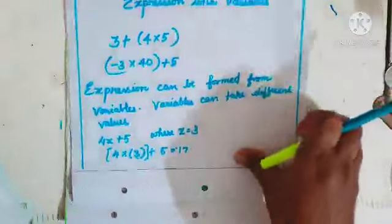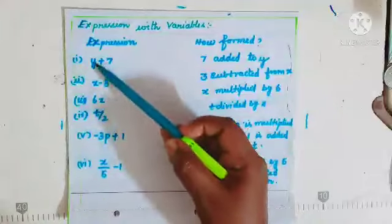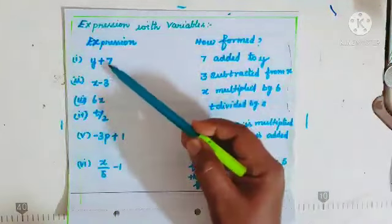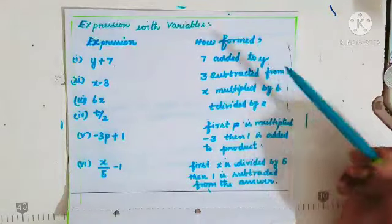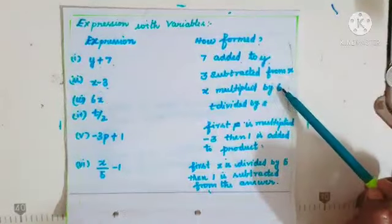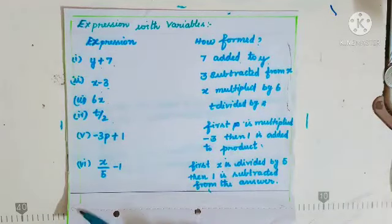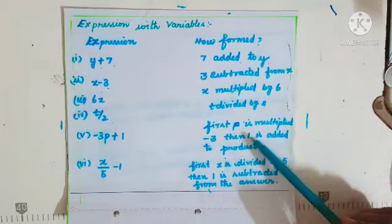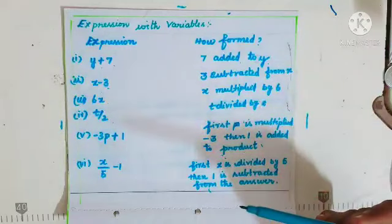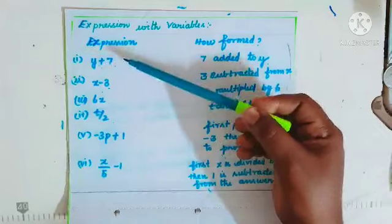'n multiplied by 2, then 1 subtracted from the product' gives 2n minus 1. Now I'll give you some expressions you can change to sentences. y + 7: '7 added to y.' x minus 3: '3 subtracted from x.' 6x: 'x is multiplied by 6.' t by 2: 't divided by 2.' minus 3p + 1: 'p is multiplied by minus 3, then 1 is added to the product.' You can change any alphabet or number and form 10 such sentences as an activity.